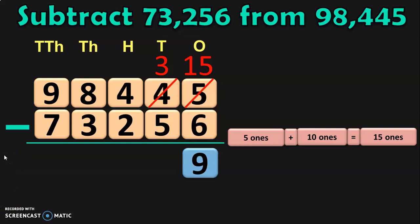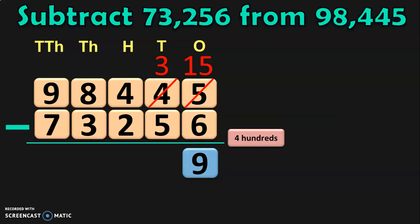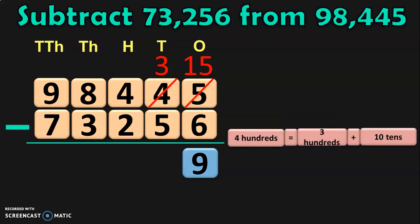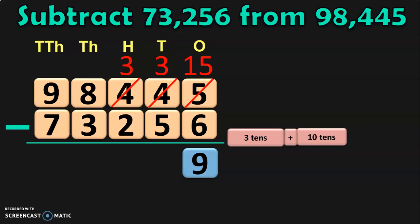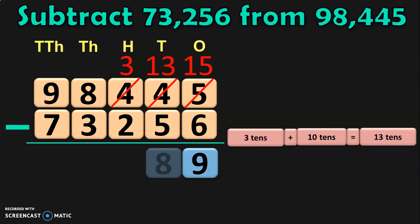Next, move to the tens place. We have 3 minus 5. Here again, we know that 5 is greater than 3. So, we will have to regroup the hundreds place now, where you have 4 hundreds. 4 hundreds can be written as 3 hundreds plus 100, and 100 is nothing but 10 tens. So, 4 hundreds is equal to 3 hundreds plus 10 tens. Retain the 3 hundreds in the hundreds place and take this 10 tens to the tens place. In tens place, you already have 3 tens. So, 3 tens plus 10 tens will give you 13 tens. Now, in the tens place, you have 13. So, 13 minus 5 will give you 8.